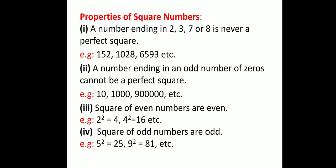The second property is: a number ending in an odd number of zeros cannot be a perfect square. If the number of zeros at the end of a number is odd, it will not be a perfect square. Third property: square of even numbers are even. For example, 2 squared is 4 and 4 squared is 16 — both even. Fourth property: square of odd numbers are odd. For example, 5 squared is 25 and 9 squared is 81 — both odd.